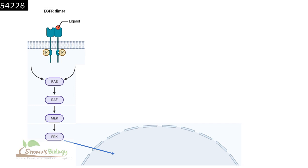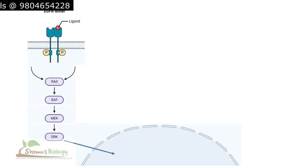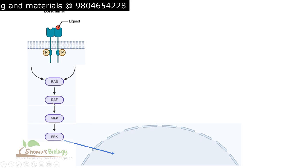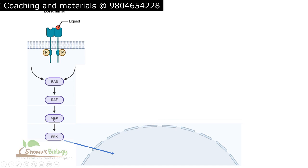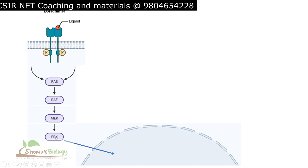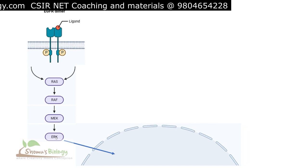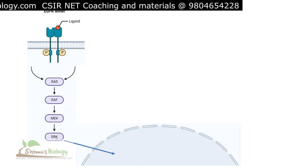This pathway is very similar to the MAP kinase pathway — it is itself a MAP kinase pathway. RAS is the activator in the cytosol, RAF is also known as MAP kinase kinase kinase, MEK is known as MAP kinase kinase, and ERK is known as MAP kinase.